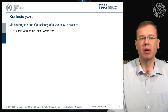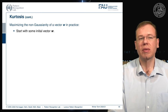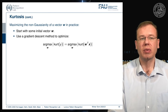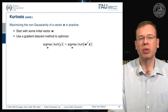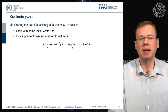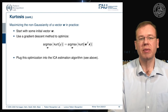To maximize non-Gaussianity of a vector w in practice, start with some initial vector w and use gradient descent to maximize the absolute value of the kurtosis after transforming with w. This optimization is then plugged into the ICA estimation algorithm seen in the previous video.